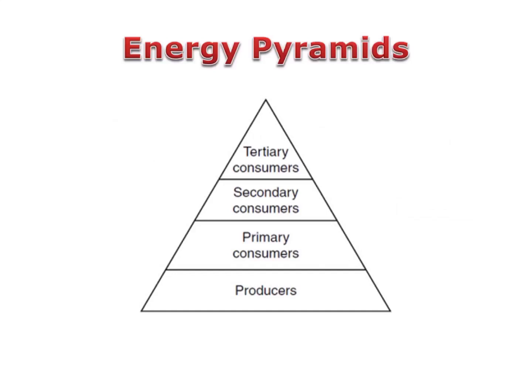Energy pyramids show the relative amounts of energy in each trophic level in a food chain. Producers are always found at the bottom of an energy pyramid where it is the widest. That's because producer populations always have the greatest amount of chemical energy. You can also think about producers as being the foundation of the food chain.